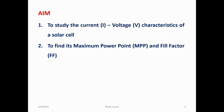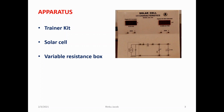The aim of the experiment is to study the current and voltage characteristics of a solar cell and to find its maximum power point, i.e. MPP, and fill factor. The apparatus consists of a trainer kit which includes the circuit for the analysis, a DC ammeter in the range 0 to 2 ampere, a DC voltmeter in the range 0 to 2000 millivolt, a solar cell, and a variable resistance box.